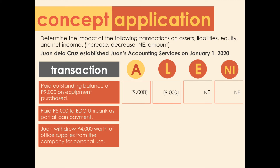Take note that for transaction seven, the purchase of the equipment already occurred previously — here the company is only paying an outstanding balance relating to that earlier purchase. This is why the equipment is no longer recognized in this transaction. Transaction eight: paid 5,000 pesos to BDO Unibank as partial loan payment. This decreases assets by 5,000 due to the cash payment and decreases liabilities by the same amount.